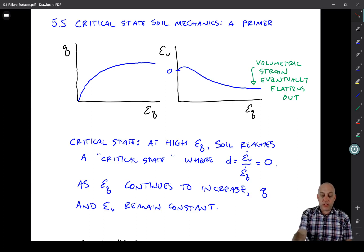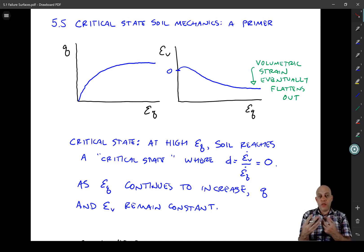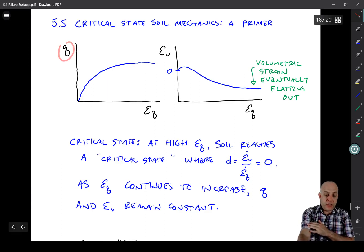When the deviatoric strain becomes large, the particles have undergone a lot of movement past each other, they've dilated, done what they're going to do, you reach this critical state condition where the soil can continue accumulating deviatoric shear strain without accumulating any deviatoric shear stress or volumetric strain.